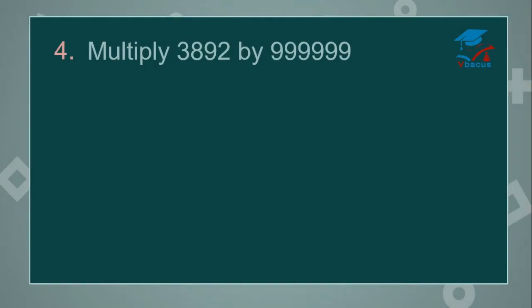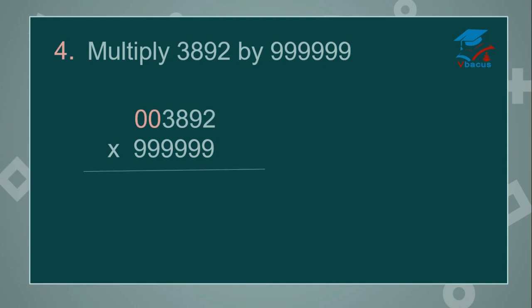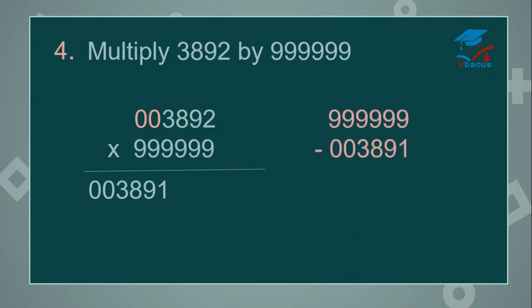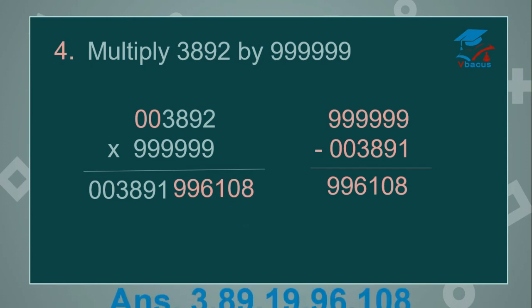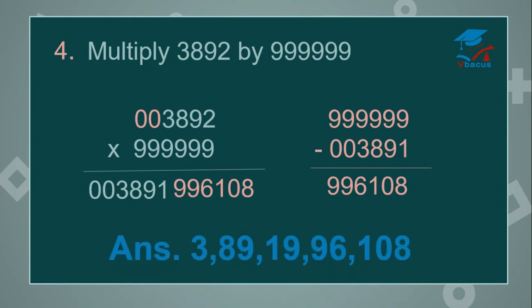Now one more question: multiply 3892 by six 9s (999999). Here also you can insert 2 zeros and make the same number of digits in the multiplicand and multiplier. Write the predecessor of 3892, that will be 3891 — this is the first part. Now subtract 3891 from 999999. Your answer will become 996108. This is the second part, so your answer will become 3891,996108. You can check in the calculator.